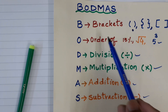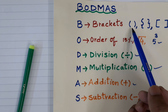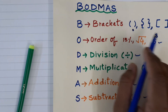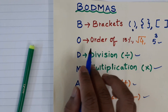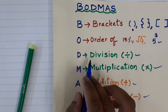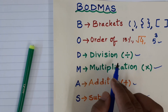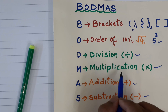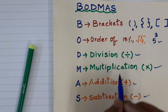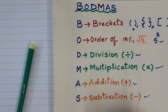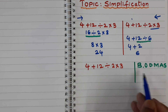B stands for brackets — if brackets are present, first solve the numbers inside: open common bracket first, then curly bracket, then square bracket. Second order is O — if we have exponential or root numbers, solve them first. Third order is D for division, then M for multiplication, then A for addition, and finally subtraction.